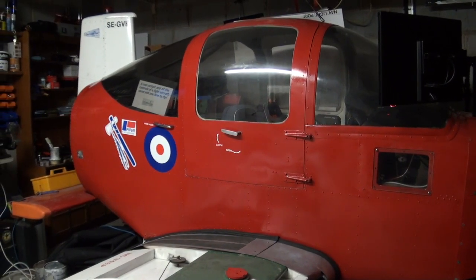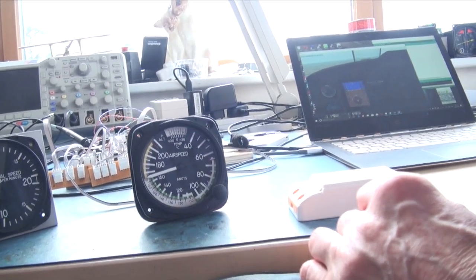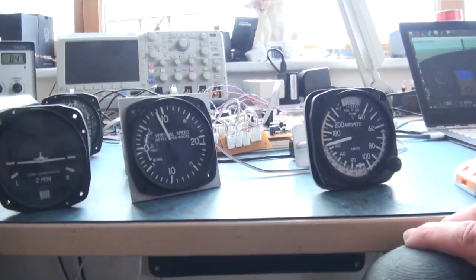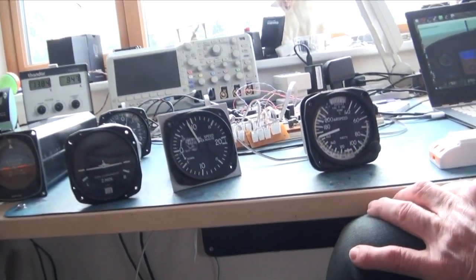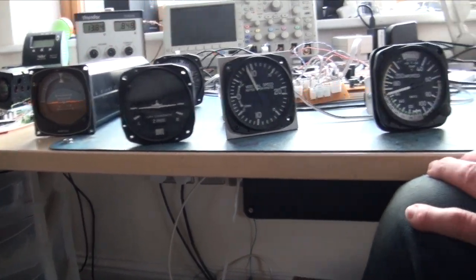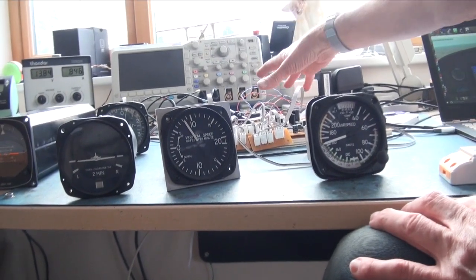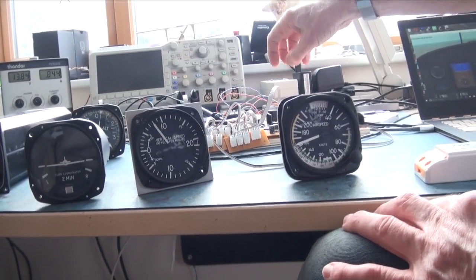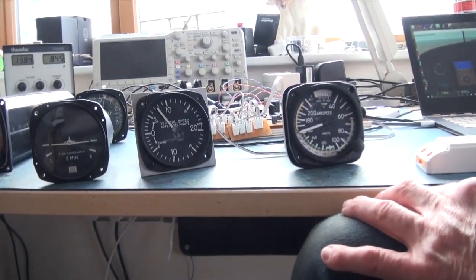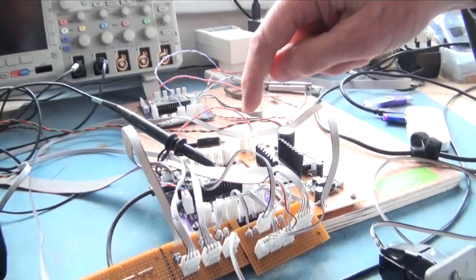Last time we did some filming, we just had three instruments: altimeter, artificial horizon, and airspeed, driven through two cards on this baseboard. What I've managed to do now is get all five instruments onto a single interface card, together with some filtering which we found we needed.